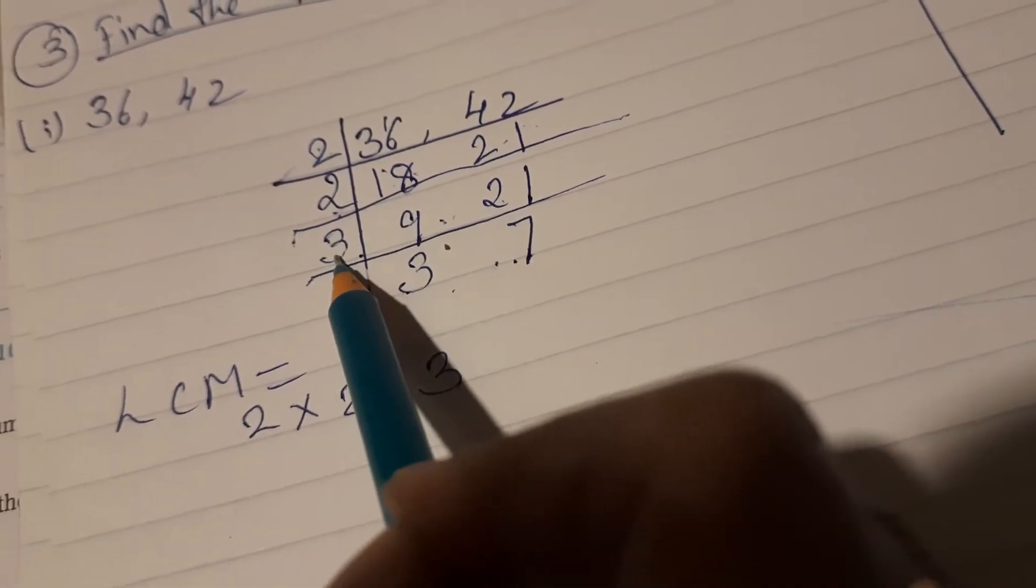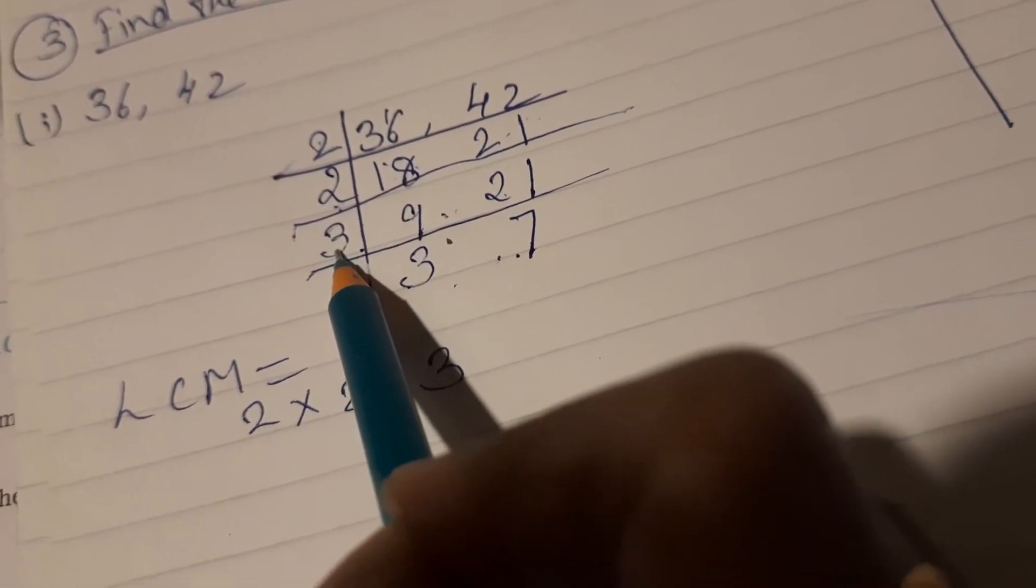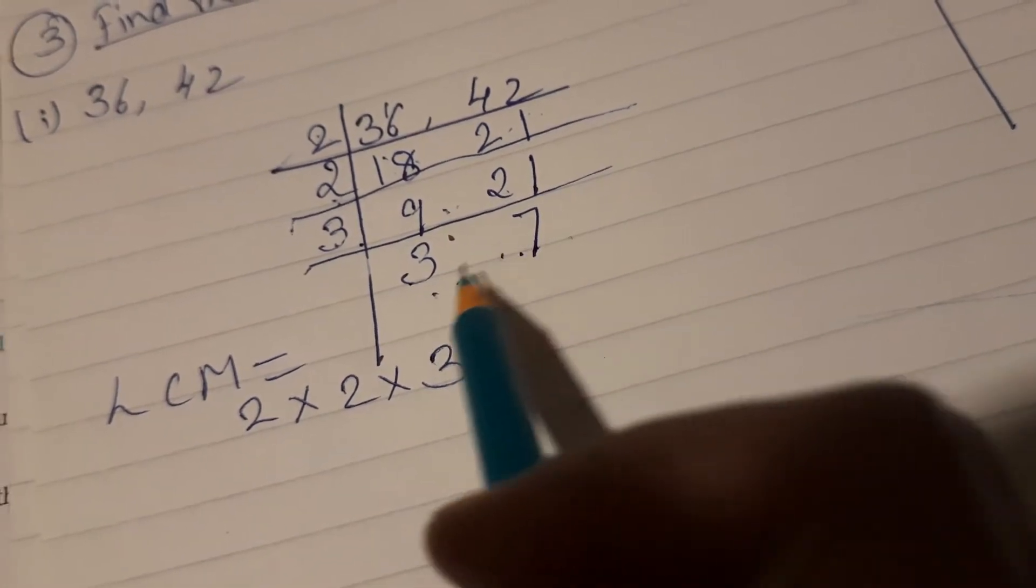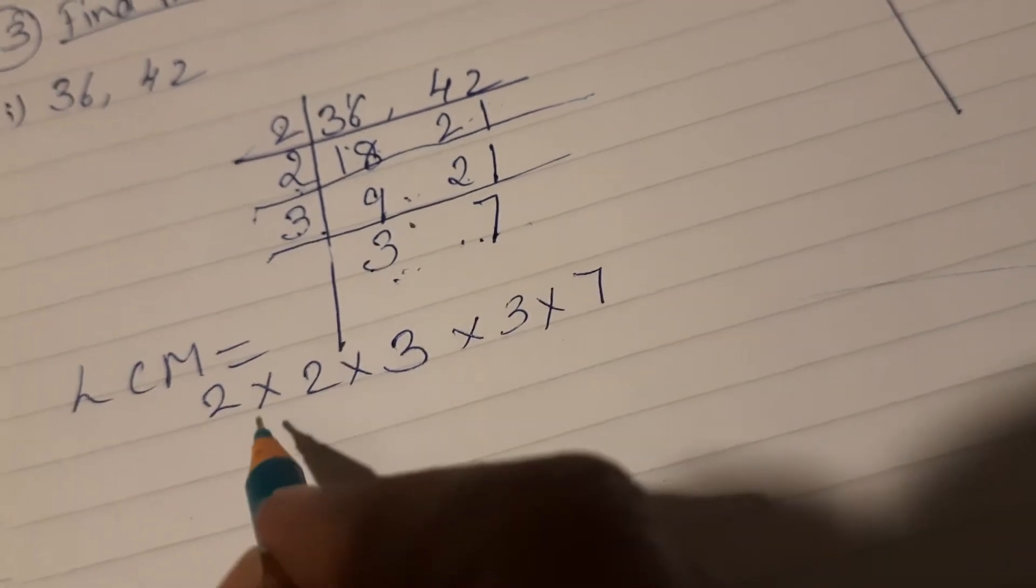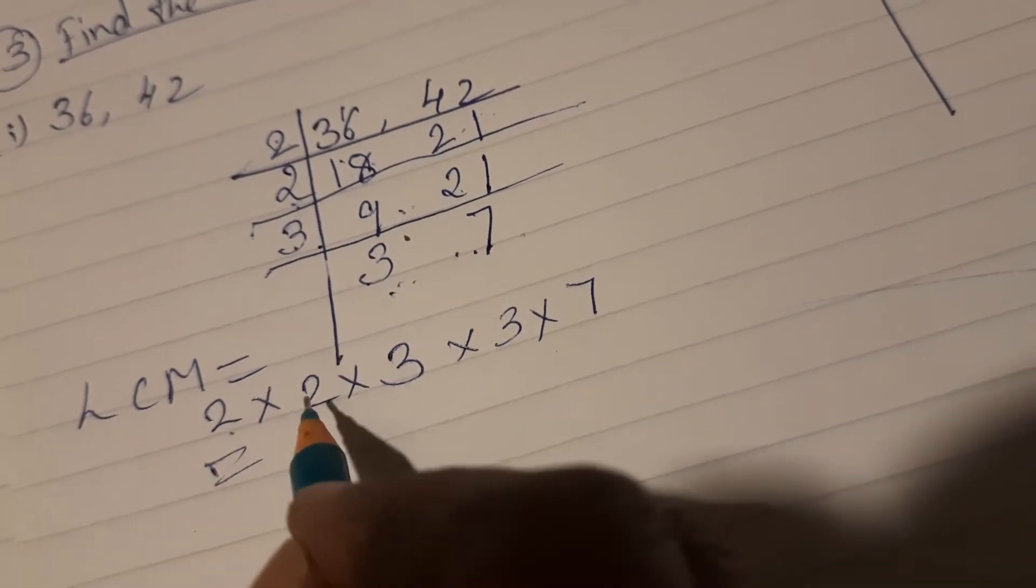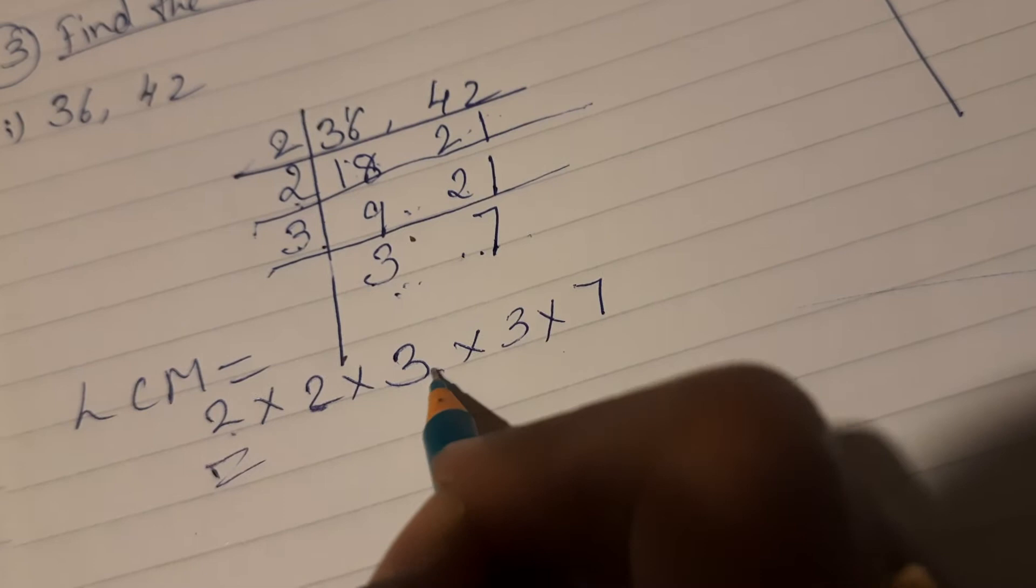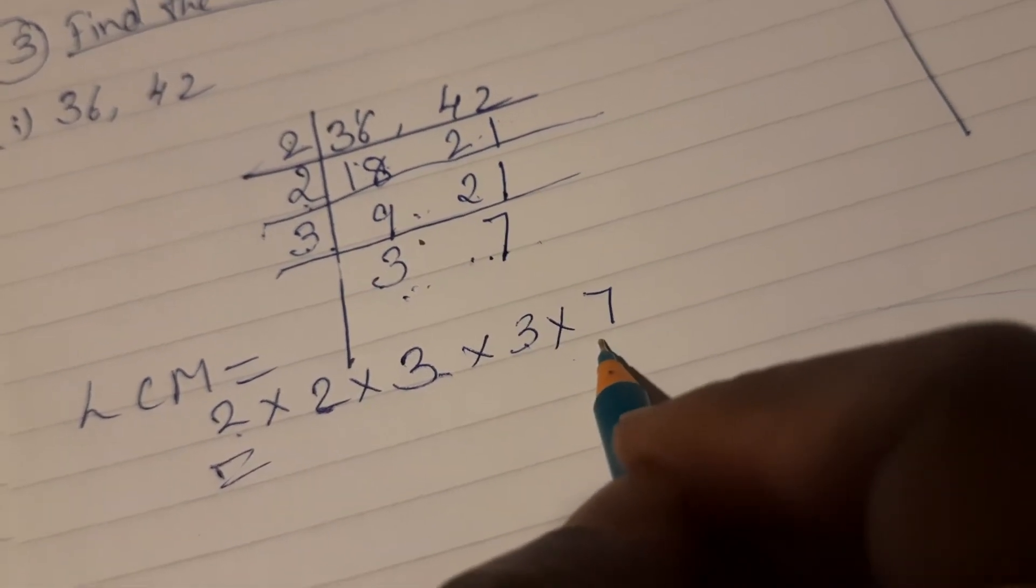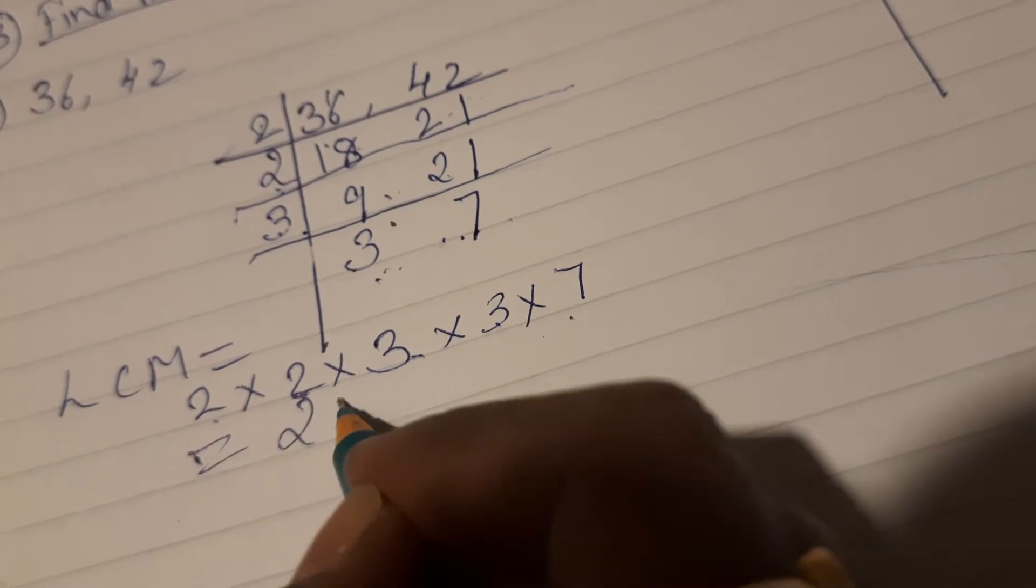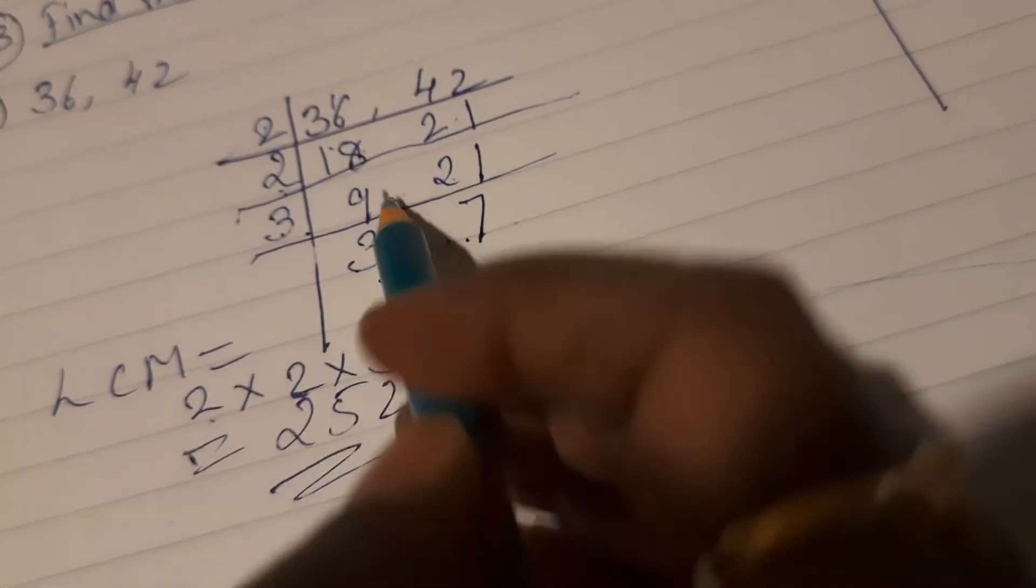2 into 2 into 3, these are common factors, into the uncommon, that is 3 into 7. That gives us 2 twos are 4, 4 threes are 12, 12 threes are 36. 252. So LCM of 36 and 42 is 252.